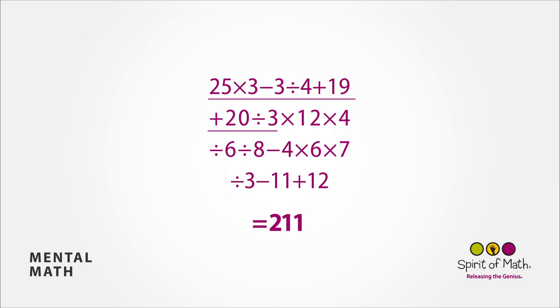Divide that by 3 is 19. Multiply that by 12 and by 4 again, divide it by 6 and divide it by 8. Remember the hint at the beginning — 12 times 4 divided by 6 divided by 8 is 1. So 19 times 1 is still 19.